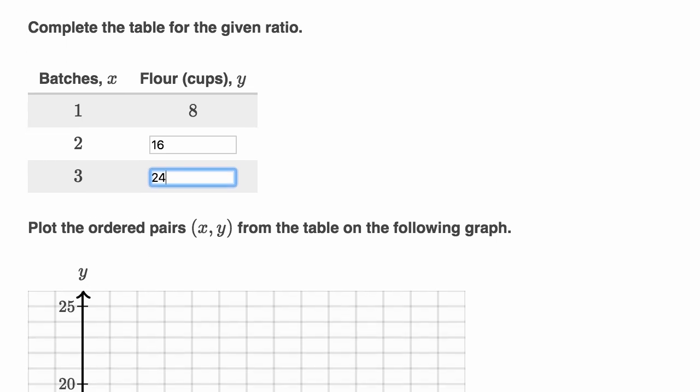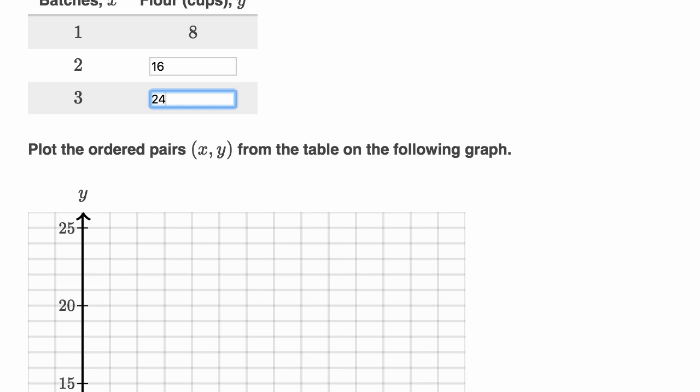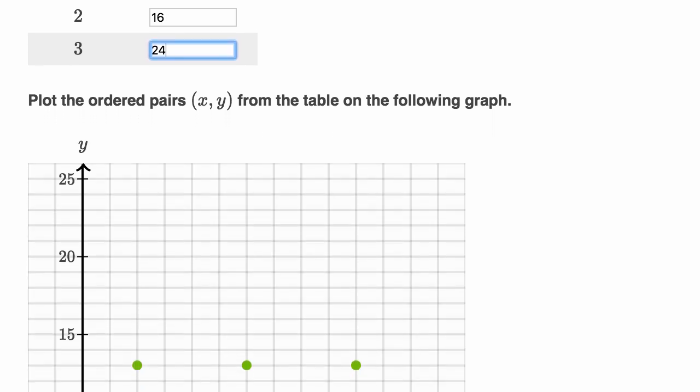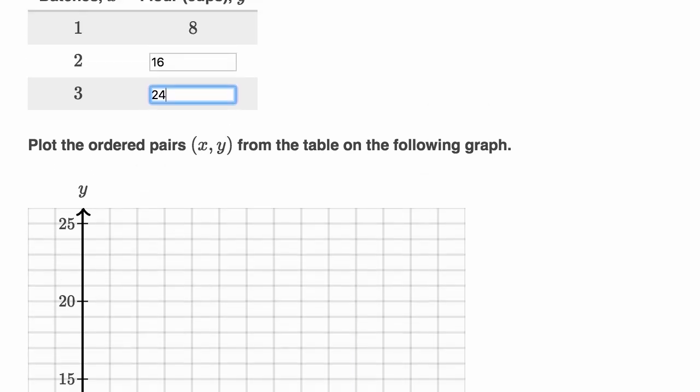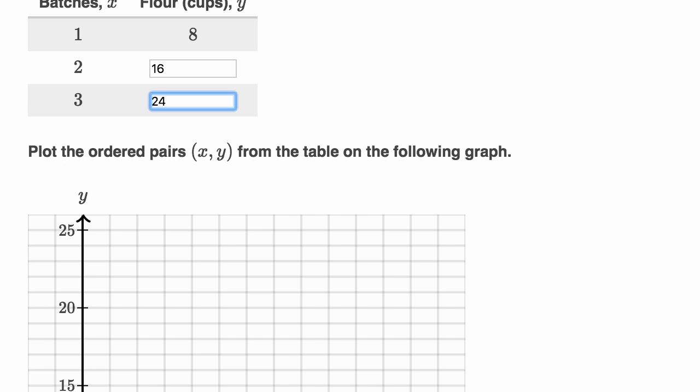Now down here, they say plot the ordered pairs (x, y) from the table on the following graph. So we want to graph 1 batch/8 cups, 2 batches/16 cups, 3 batches/24 cups.